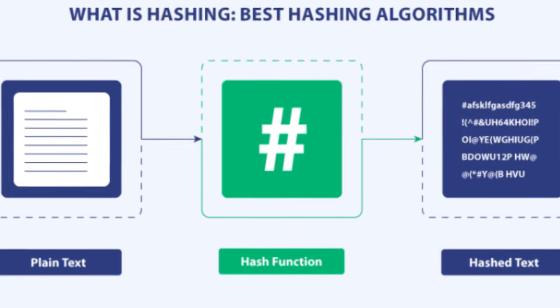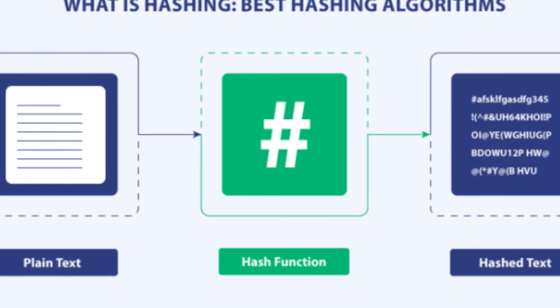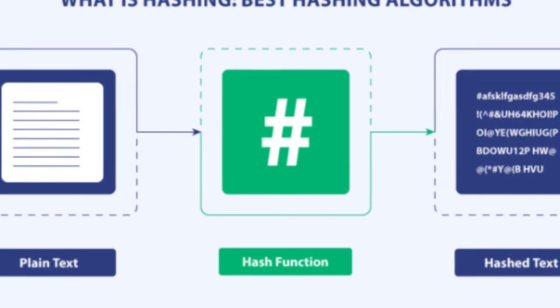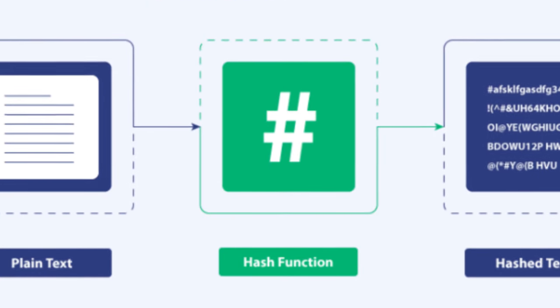The key characteristics of a good hash function include producing a fixed-size output, being fast to compute, and being resistant to reverse engineering, making it difficult to derive the original input from the hash value.